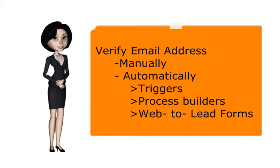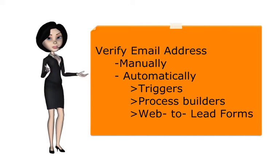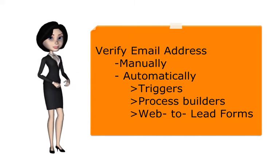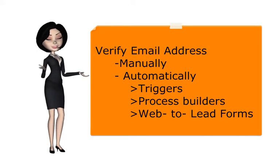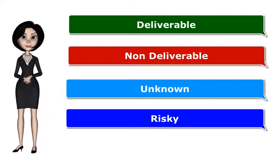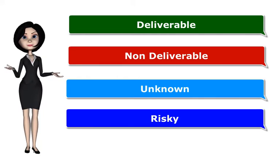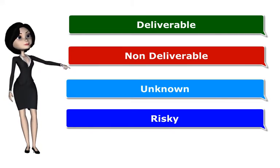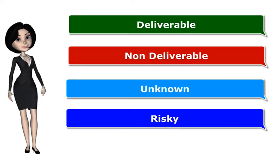The verify the email app helps in verifying the email address of a record manually, automatically, via triggers, process builders, or through web-to-lead forms. Using the app, one can check the status of an email address — whether it is deliverable, non-deliverable, unknown, or risky.